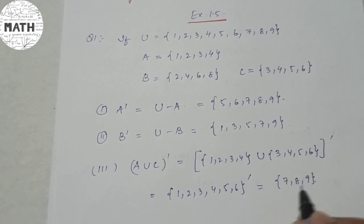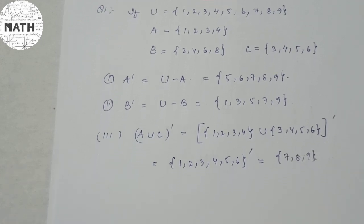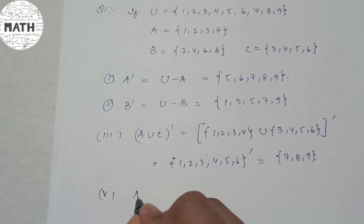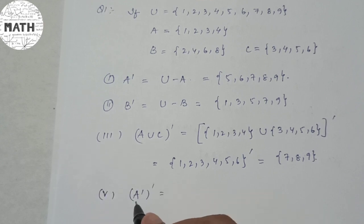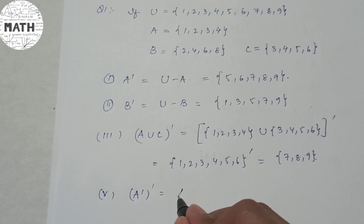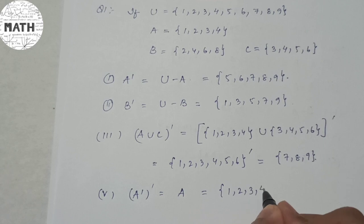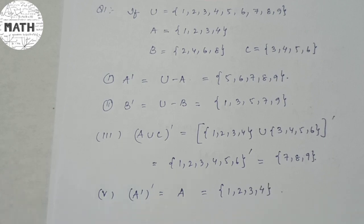Lastly, for number 5, find A complement complement. According to the properties of complement, the complement of a complement equals the original set, so A'' = A = {1, 2, 3, 4}. That is all about the complement of a set.